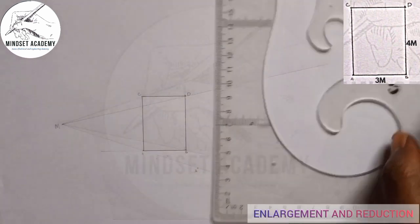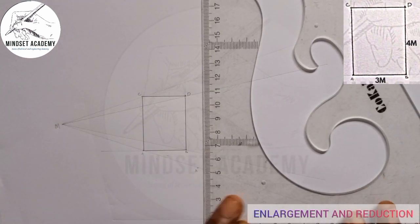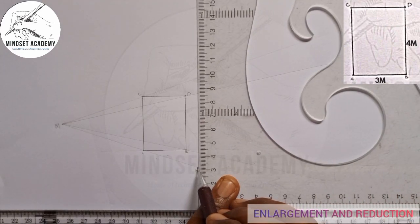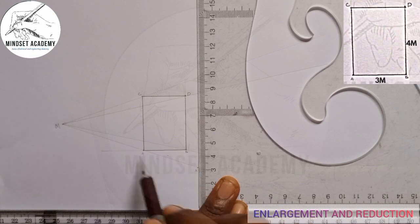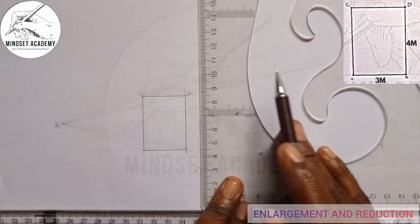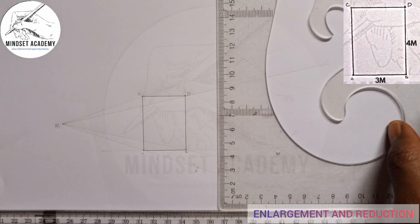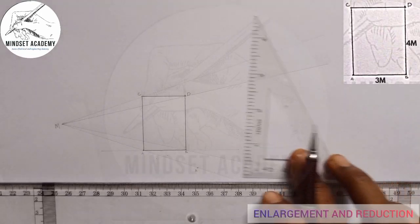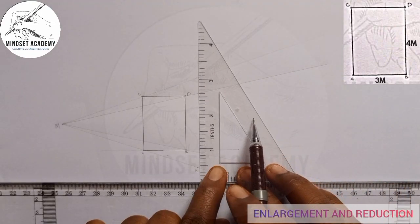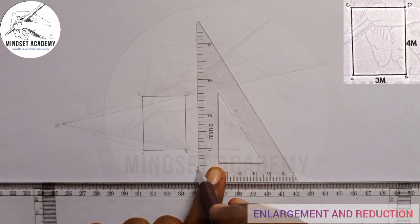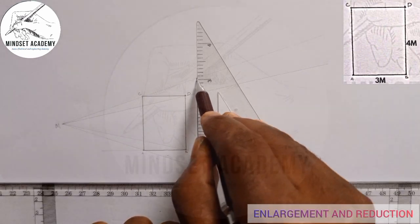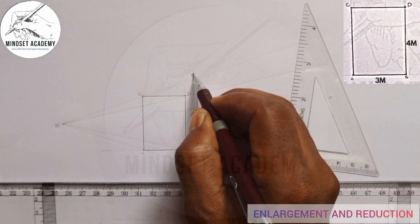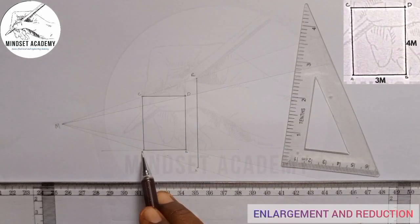So I'll just take my T square or my set square and place it at this point A. This is the line of A. I want A to B is connected, so I'll just join line of A to B. From line of A to B. From A to C.